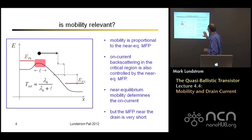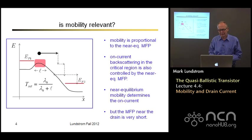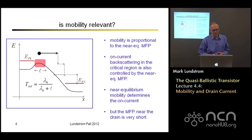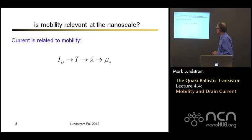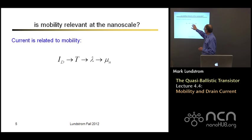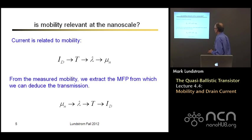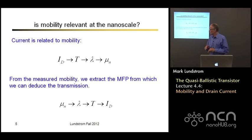It's important to note that near the drain end, where the carriers are very energetic and there's a lot of scattering, the mean free path is very, very small — much smaller than you would deduce from the mobility. But that's not what limits the on-current. What limits the on-current is what goes on in the bottleneck region, that little region of length L. So current is related to transmission, transmission is related to mean free path, mean free path is related to mobility, and in that sense there's a connection between mobility and on-current, even though it's hard physically to think about a mobility in these very, very short devices.